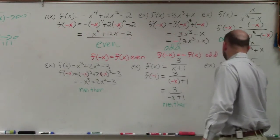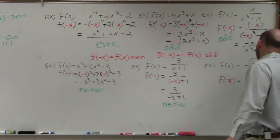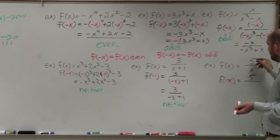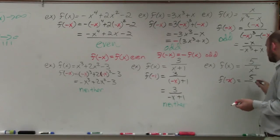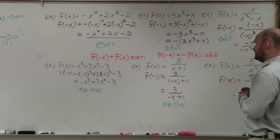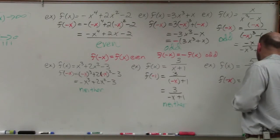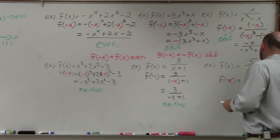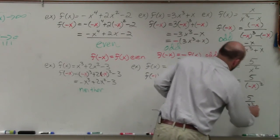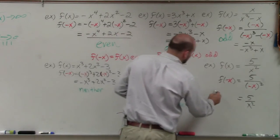For our last one, we evaluate for f of negative x. I have 5 divided by x squared. When I plug in negative x, I get 5 divided by negative x squared. Well, negative x squared is just x squared. So I get 5 over x squared, which is my original equation. Therefore, this is an example of an even function.